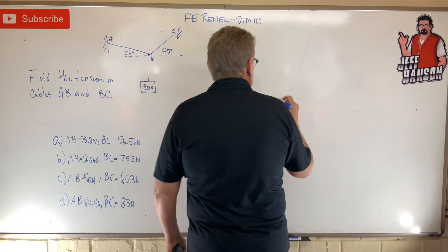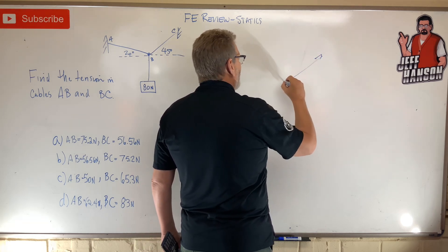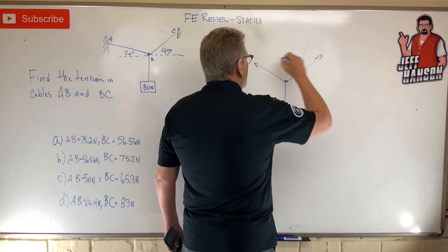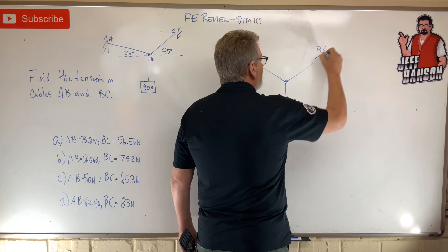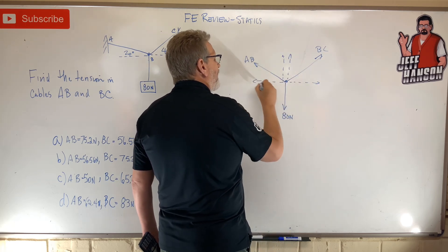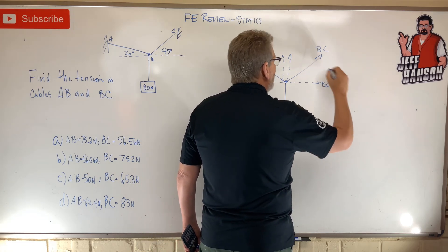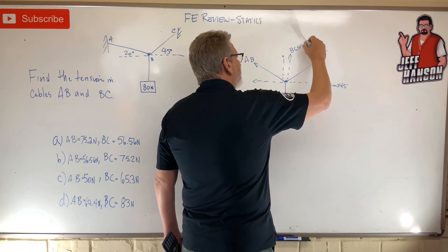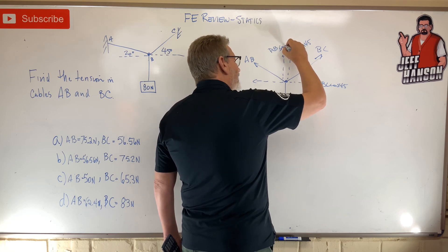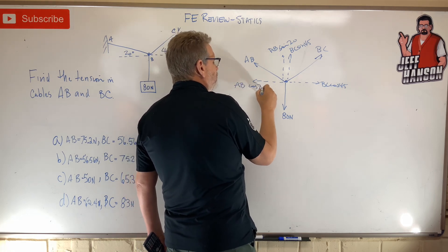I think this is a perfect problem for a free body diagram. Here we go — free body diagram. This is AB and BC. Breaking my components up: BC cos45, BC sin45, AB sin20, AB cos20.